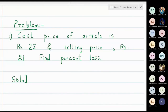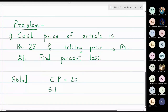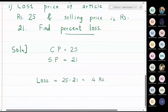Problem 1: The cost price of an article is 25 rupees but the selling price is only 21 rupees. Since the original price is 25 and we are selling it at 21, we have a loss. CP is 25 and SP is 21, so the loss is 4 rupees. We want to find the percentage loss.